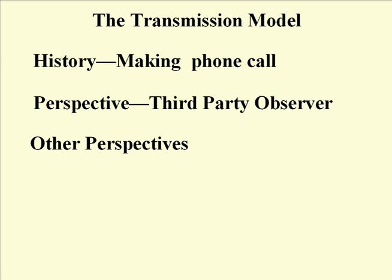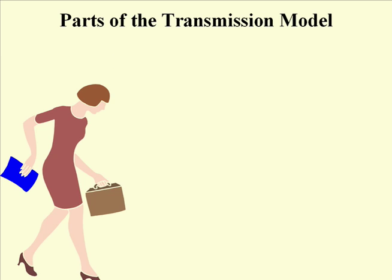So let's actually look at the aspects of the model with its parts. The first part is to think of the sender. This is the person or thing which is transmitting. This term can be source, sender, or transmitter — any word. But for us, we want to think of it as sender.